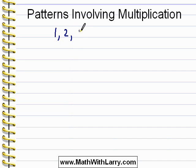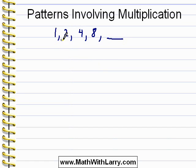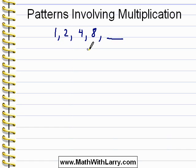I'm going to write 1, 2, 4, 8, and I want to know what comes next. The first thing we should look for is an addition pattern — do we get from one number to the next by adding in some way? For this problem we can easily see that the answer is no. To get from 1 to 2 we added 1, then we added 2, then we added 4, so the pattern breaks down. It's not a pattern involving addition.